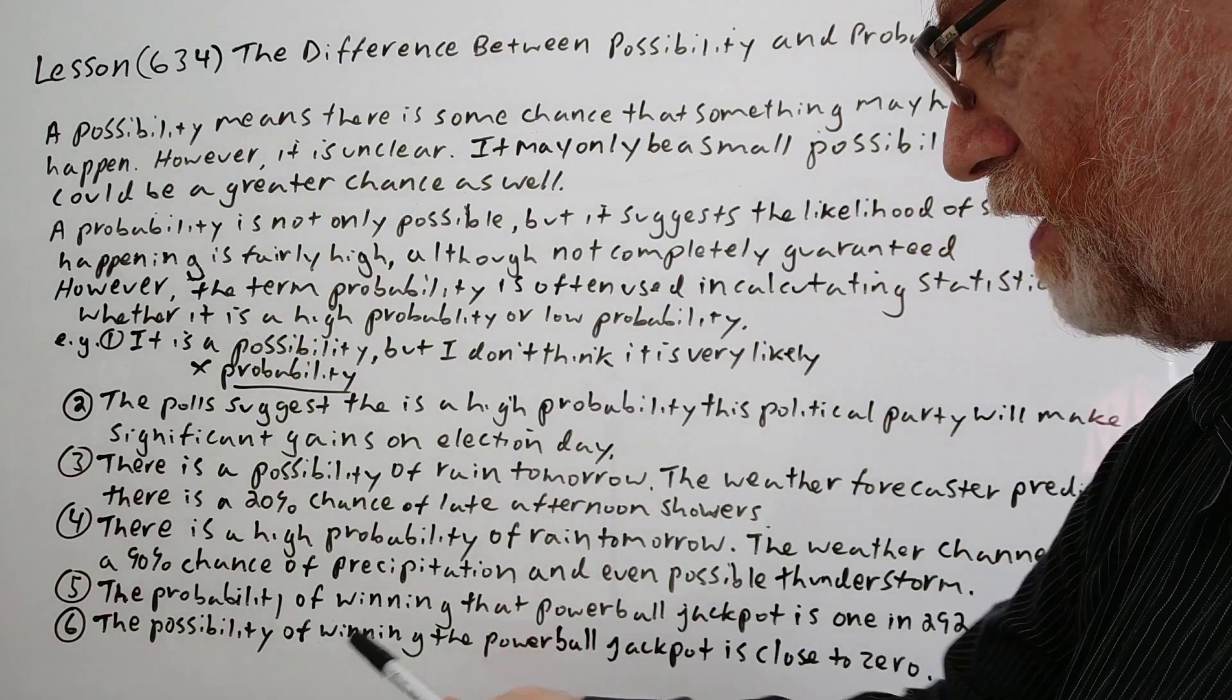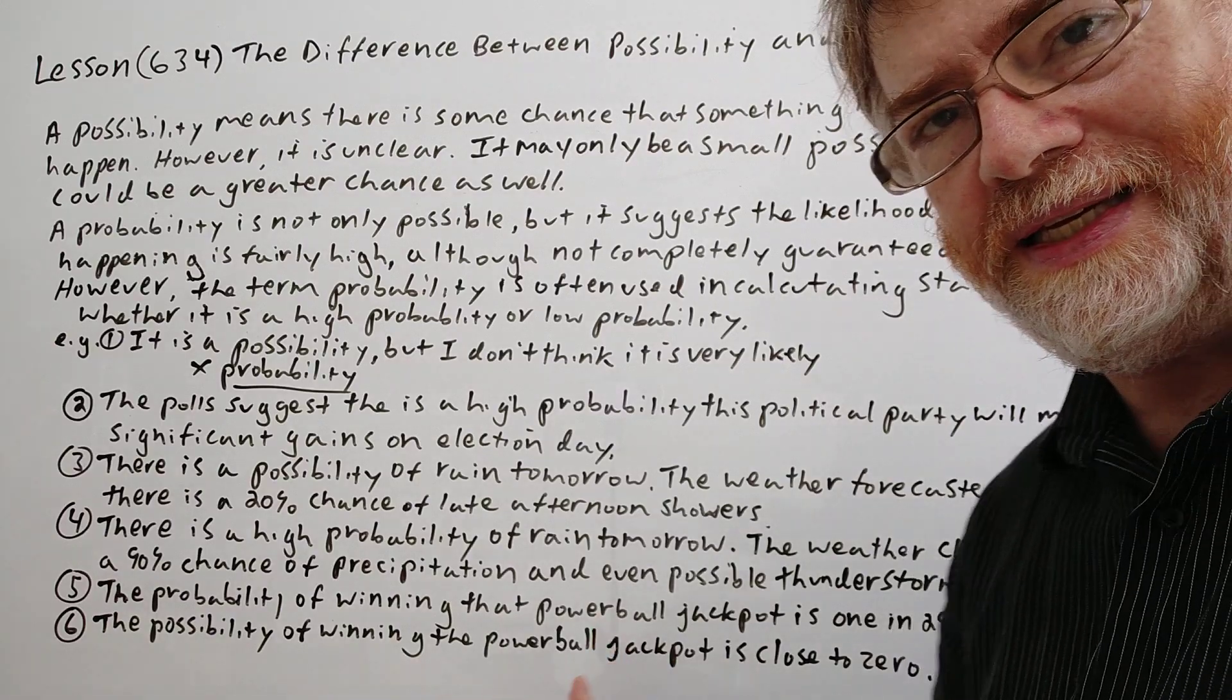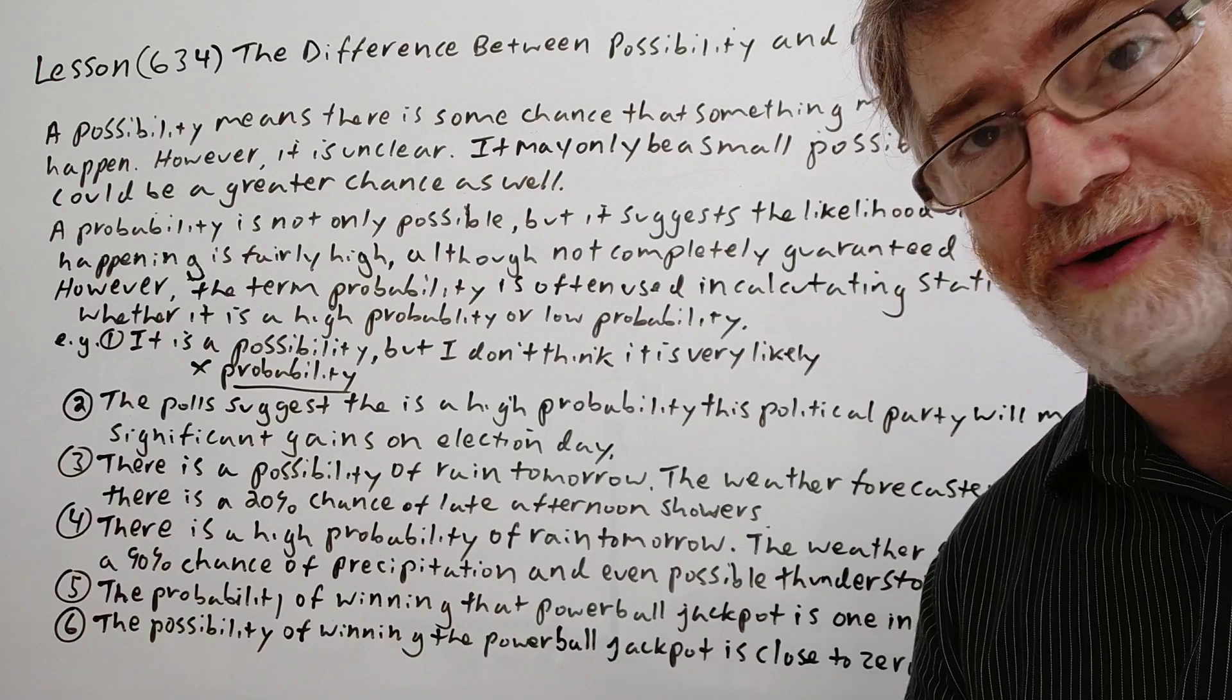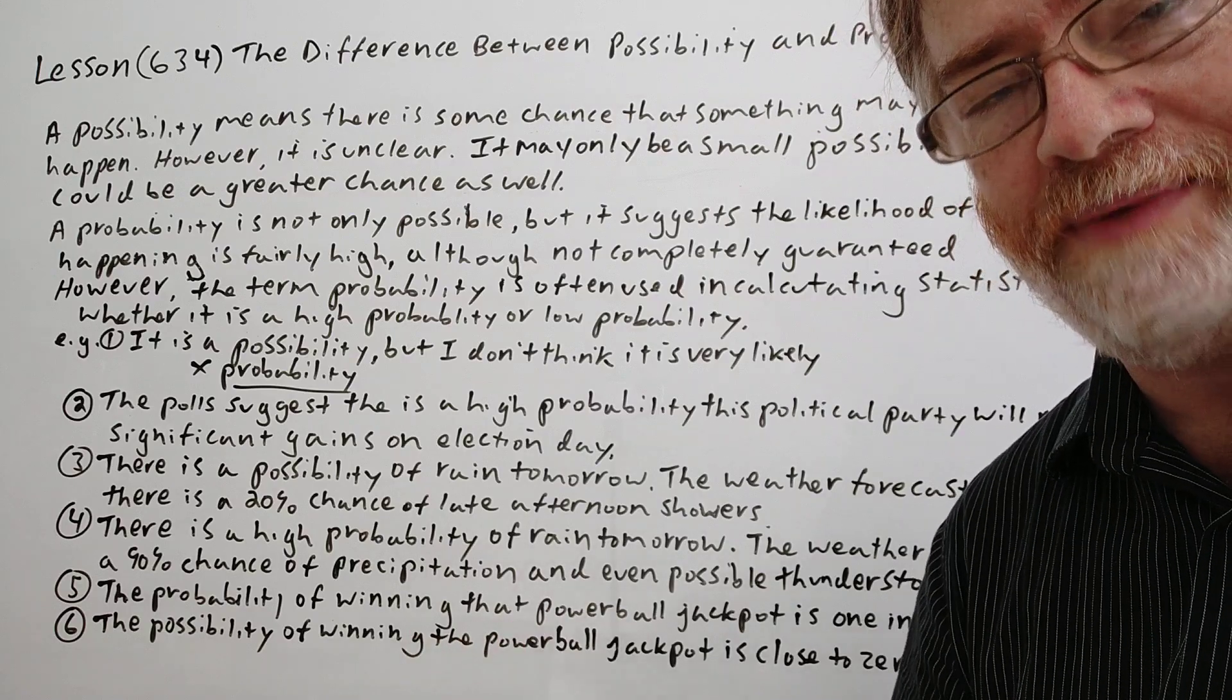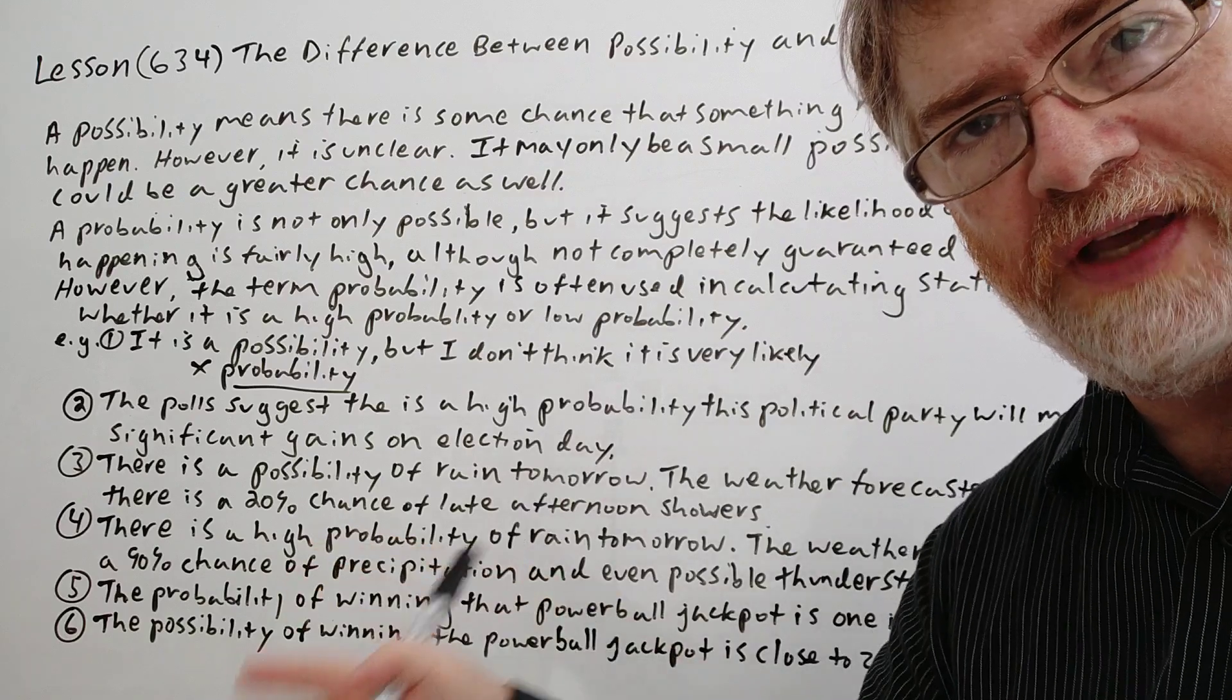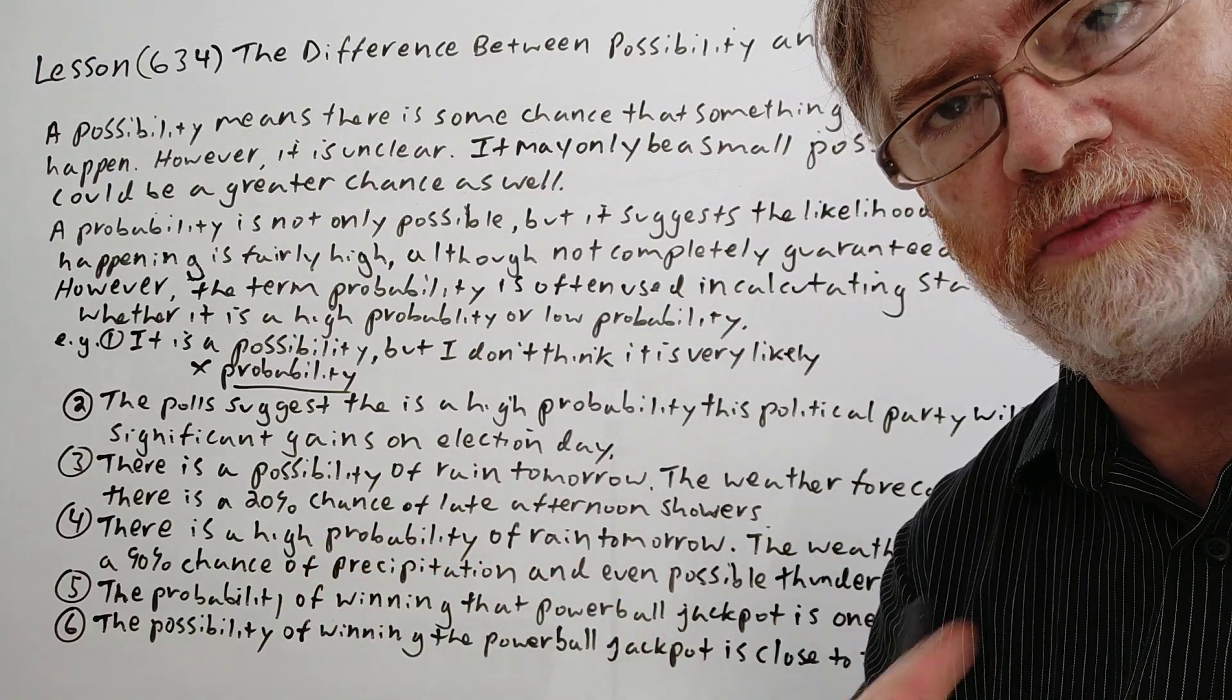Here, the possibility of winning the Powerball jackpot is close to zero. Now here we're not using statistics anymore and we're letting you know it's very, very low. It's so low that it really is close to zero of winning the jackpot anyway. I hope you got it. I hope these examples can help you get a better feel of when you're more likely to use possibility and when you're more likely to use probability.